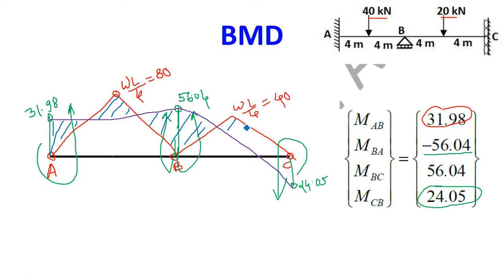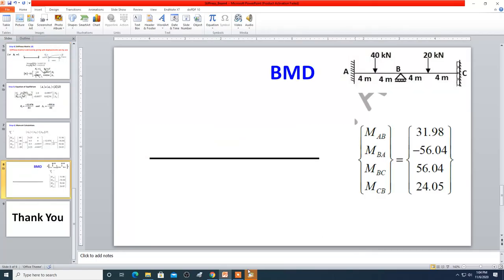This completes the solution of a continuous beam with a guided support using the structural approach of the stiffness matrix method. In the next class, we will take a problem on the analysis of a continuous beam using the structural approach of the stiffness matrix method when a spring support is provided. Thank you very much.